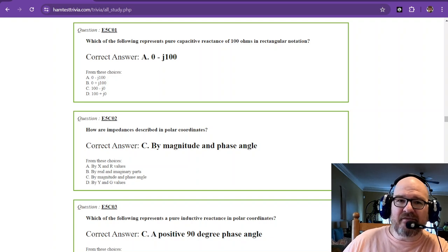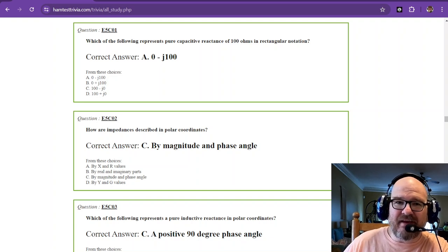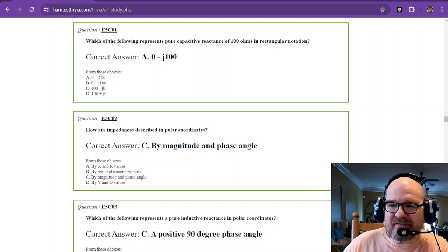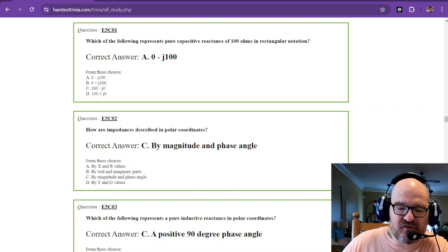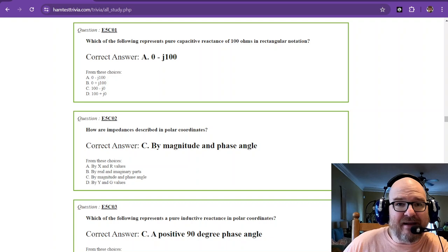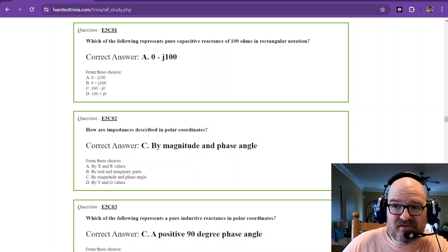Welcome back to the Amateur Extra License Study. This is Element 4, Sub-Element 5, Charlie, and we're talking about polar coordinates today. Hopefully the drawings that I've done, I've worked out the math for you to show you how to find it, and I hope it demystifies some of this just a little bit.